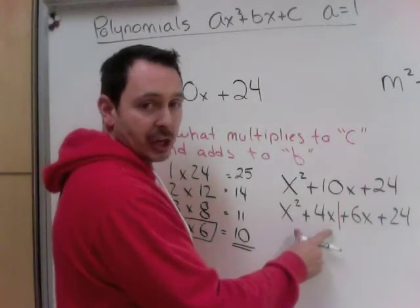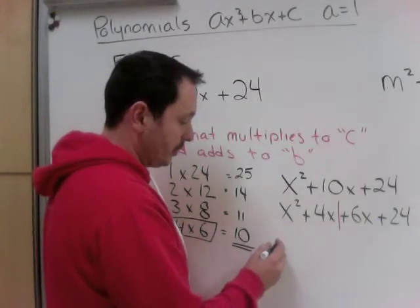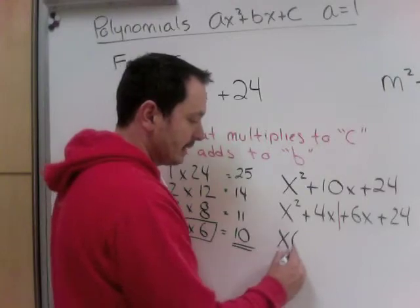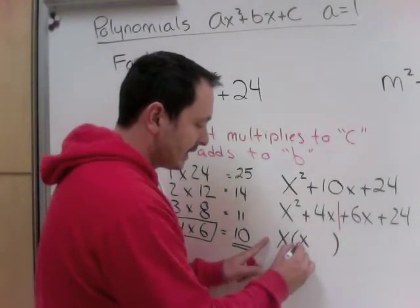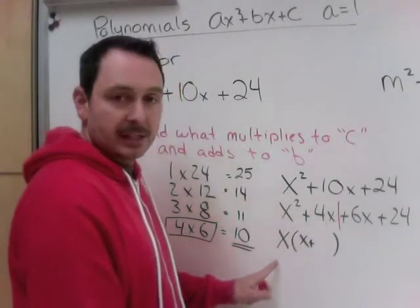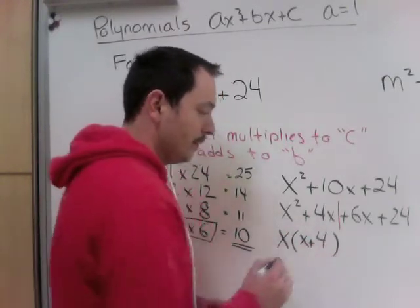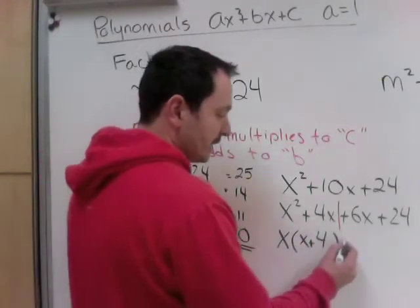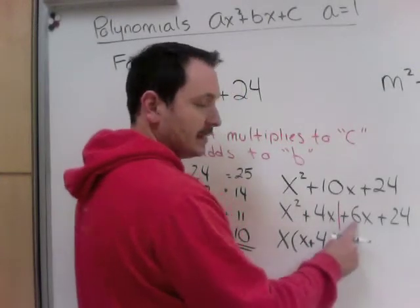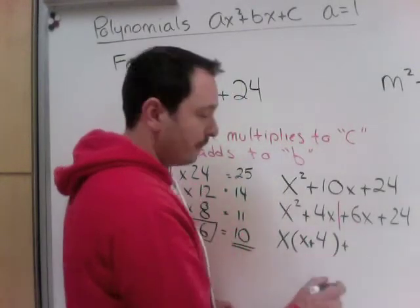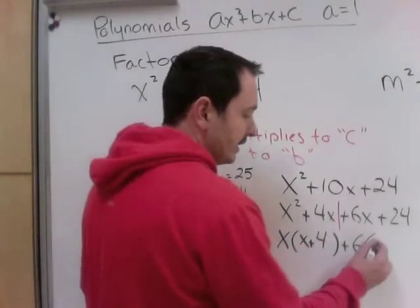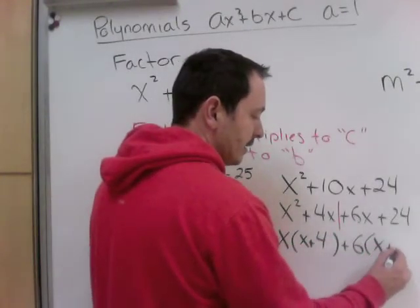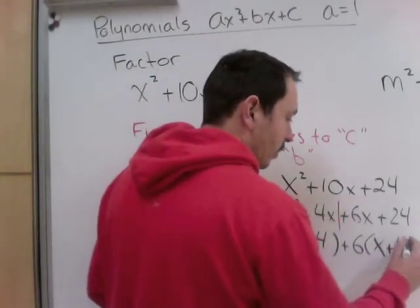x squared and x share an x in common. So, I'm going to factor out the x. And I'm left with x squared divided by x is x, 4x divided by x is 4. And now on the other side, 6x and 24 share a 6 in common. So, 6x divided by 6 is x, 24 divided by 6 is 4.